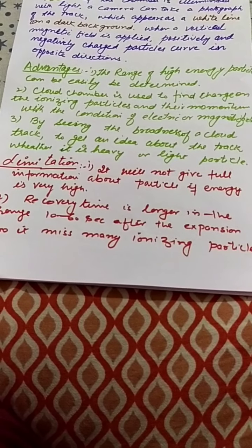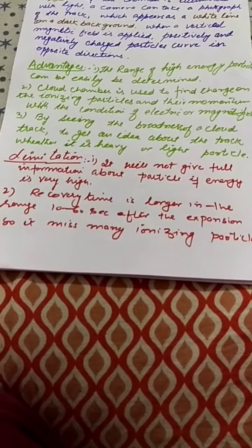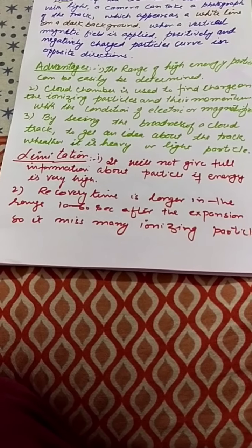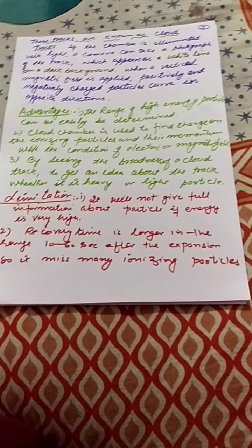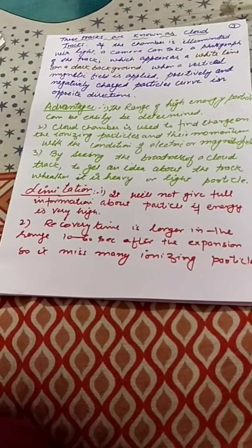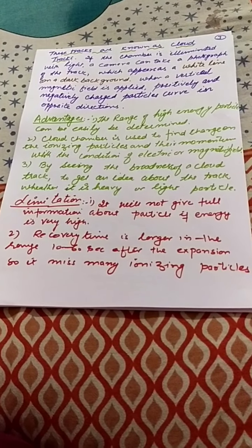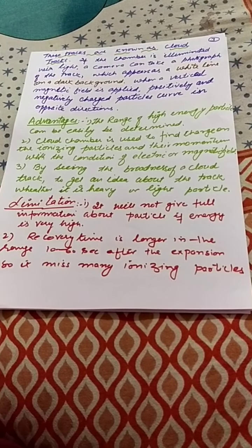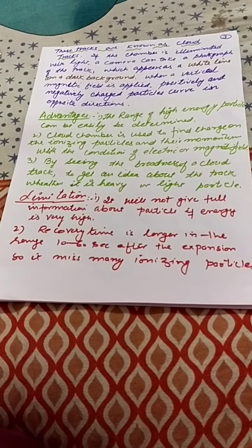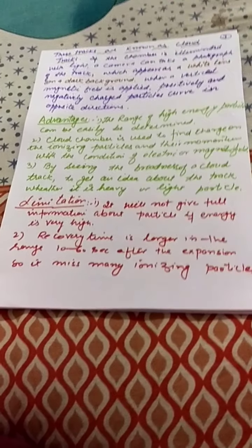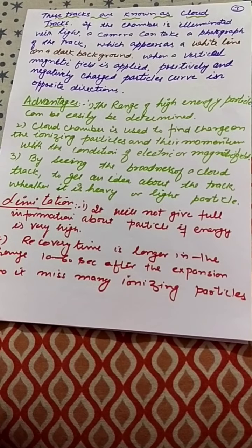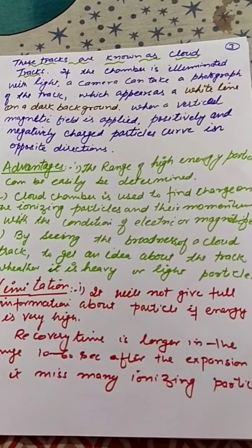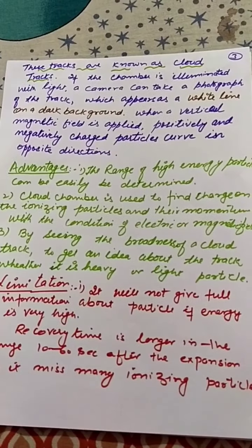Some limitations of this detector: if the energy of the ionizing particle is high, it may not completely stop in the cloud chamber and may come out of the chamber, so we will not get full information about the particle. This is one limitation. One more limitation is that the recovery time of the cloud chamber is relatively very long, approximately 10 to 60 seconds after the expansion. So it may miss many ionizing particles during this period.